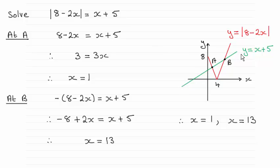It's not drawn to scale, but y equals x plus 5 is a straight line. It's going to cross the y-axis here at 5. So what I'm looking for are the points of intersection, which I've labelled a and b.